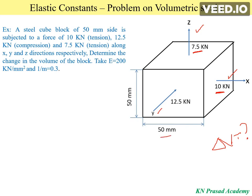The given block is a cubic block, so each side is 50 mm — length, width, and thickness are all 50 mm. The cross-sectional area of the block with respect to forces in any direction is the same, that is 50 × 50 = 2500 mm².